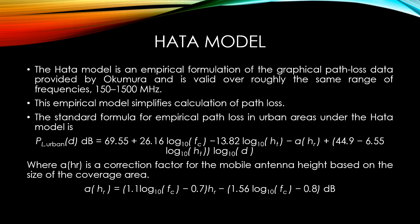Hata model. The Hata model is an empirical formulation of the geographical path loss data provided by Okumura and is valid over roughly the same range of frequencies, 150 to 1500 MHz. This empirical model simplifies the calculation of path loss because it is a closed form formula and is not based on empirical curves for different parameters. The standard formula for empirical path loss in urban areas under the Hata model is PL urban dB equal to 69.55 plus 26.16 log 10 fc minus 13.82 log 10 ht minus a(hr) plus (44.9 minus 6.55 log 10 ht) log 10 d.